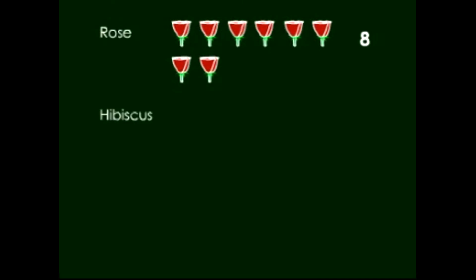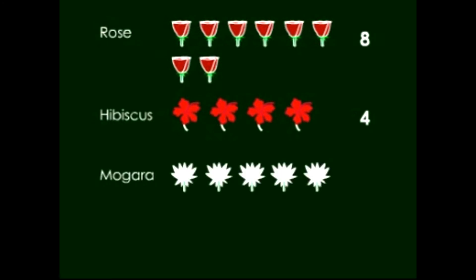Then the hibiscus. Four hibiscus flowers are there. Mogra. Five Mogra flowers are there. And only two Champa flowers are there.